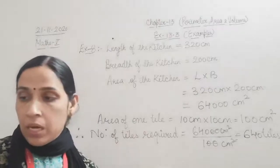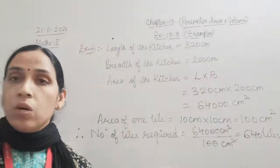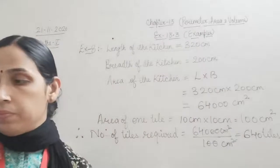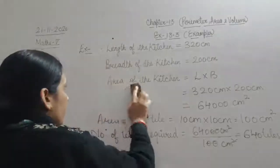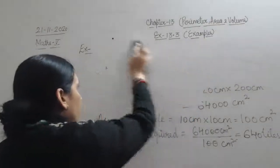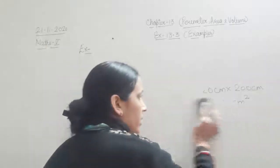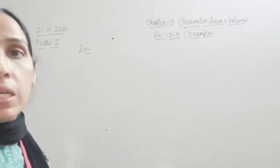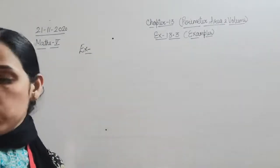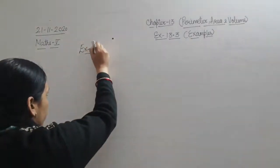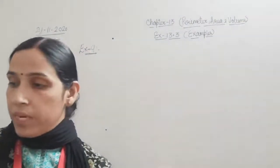With that we finish Example 8 and move to Example 9. Urvashi made a rectangular design which is 8 cm wide. This is the last example of exercise 13.3.